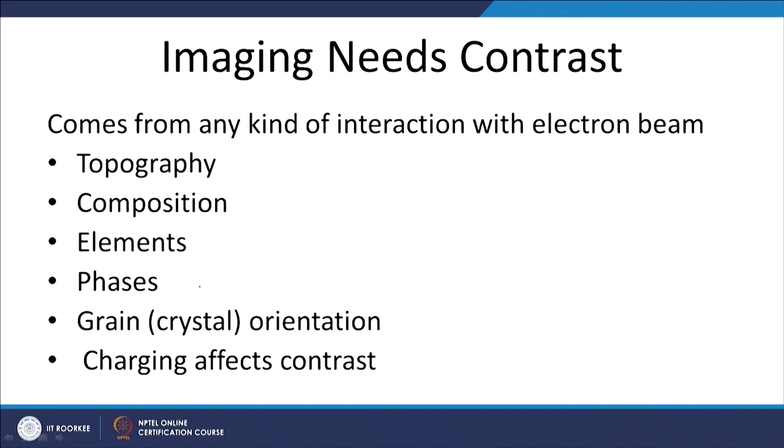Imaging needs contrast. To have a very good image we need contrast, which comes from any kind of interaction with the electron beam. It can be topography, composition, elements, phase, grain or crystal orientation, or even charging — all of these affect the contrast. Topography means the top features or textures of the image, which also needs good contrast.